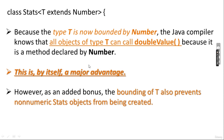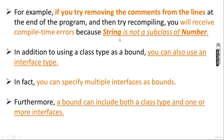The output is: average is 3.0 and average is 3.3. Notice that Stats is declared with T extends Number — that is the bounded type. The Java compiler knows all objects of type T can call doubleValue() because it is a method declared by Number. As an added bonus, bounding T also prevents non-numeric Stats objects from being created. If you try uncommenting those lines and recompiling, you will receive a compile time error because String is not a subclass of Number.